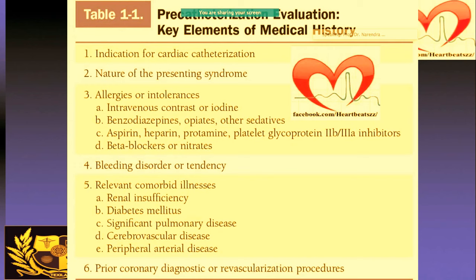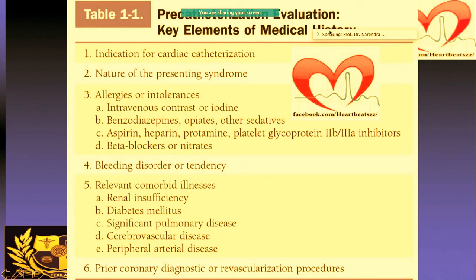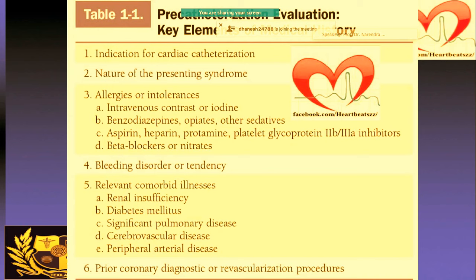In the evaluation, you should try to see what the indication is for the test, what are the presenting causes, and whether the patient has presenting symptoms. Check if the patient is intolerant or allergic to any drugs like beta blockers, aspirin, or benzodiazepines, and whether there is any tendency for bleeding. Also check for renal insufficiency, diabetes, pulmonary artery disease, COPD, stroke, or peripheral vascular disease.